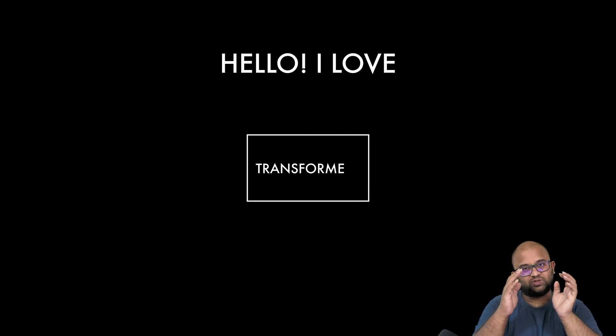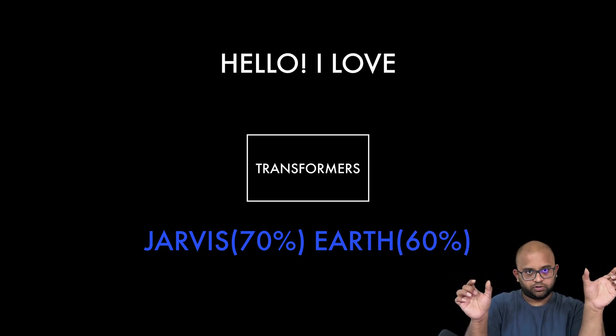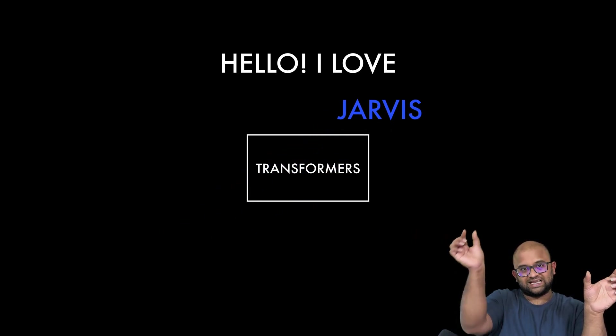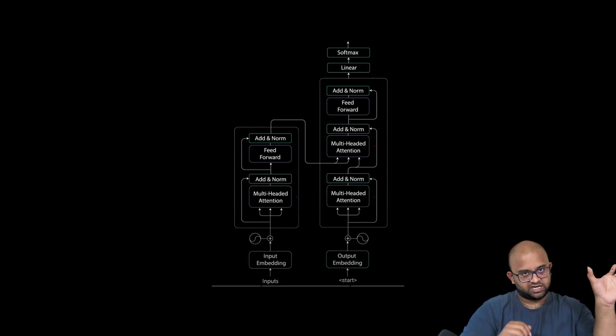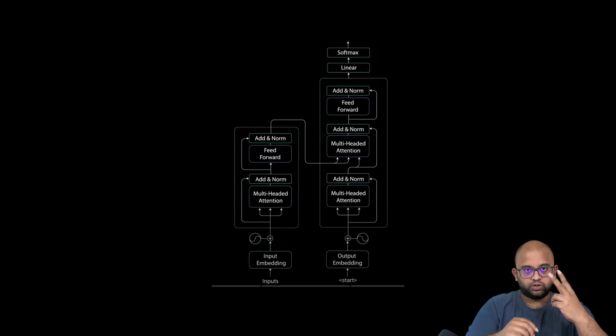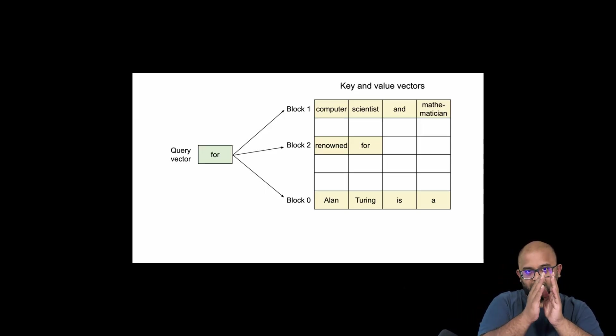Before we get into KV cache, let's take a step back and understand how a transformer works at a high level. When you pass an input prompt to a transformer block, it takes the entire input prompt and generates the probability of the next token. This predicted token is appended to the input and the entire new input is again passed into the transformer block. Inside the transformer architecture, there is only one layer which needs the entire prompt — the attention layer — and inside the attention layer there are two important components: key and value.